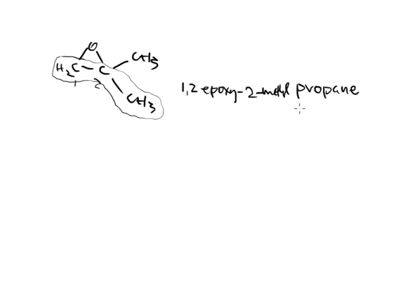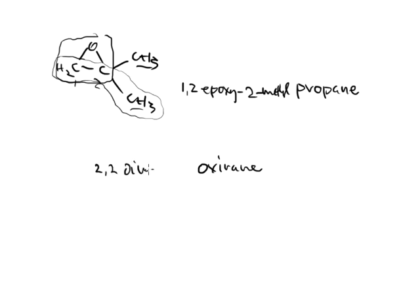The common name for that structure: looking at the oxyrane ring, then on carbon 2 I have a methyl and a methyl. So we call it 2,2-dimethyloxyrane. There's your IUPAC and there's your common name for it.